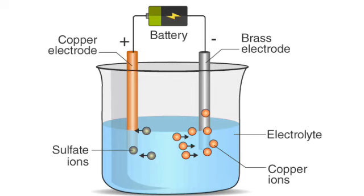Activity 2: As in Activity 1, take dilute sulfuric acid instead of lemon juice. Repeat the activity and observe. Does the tester bulb glow? Does the sulfuric acid conduct electricity? Activity 3: Repeat the activity with distilled water and observe. Does the tester bulb glow? Does the distilled water conduct electricity?